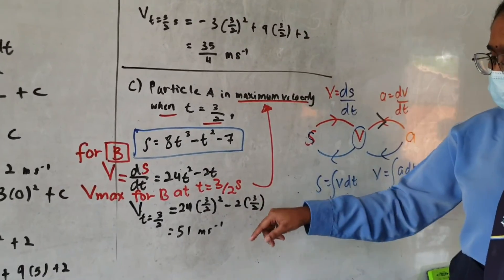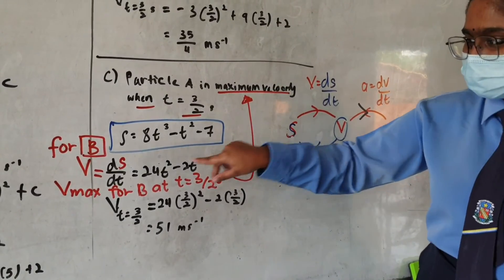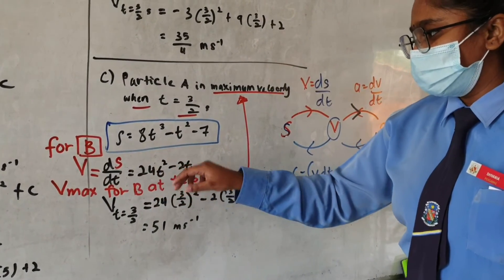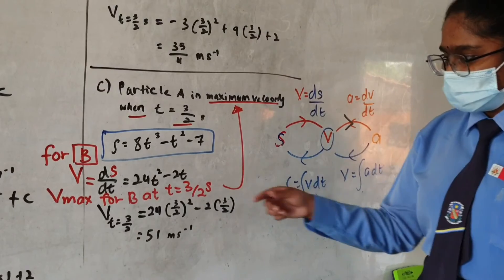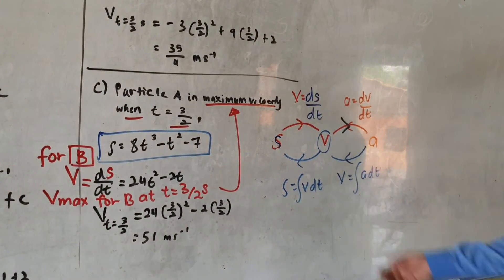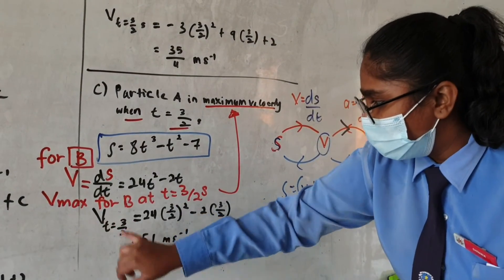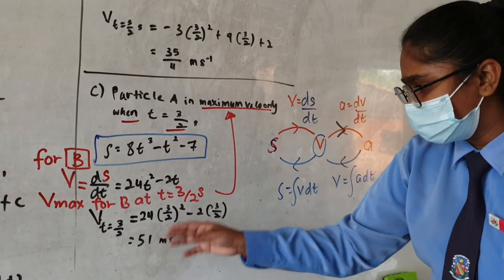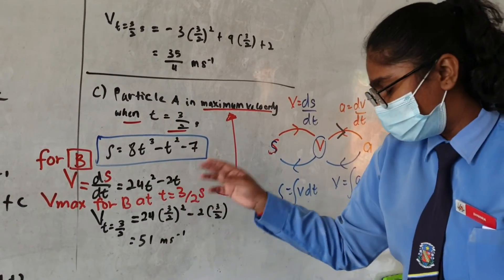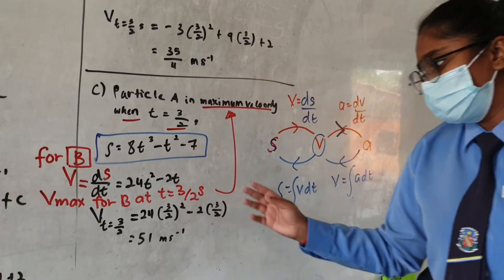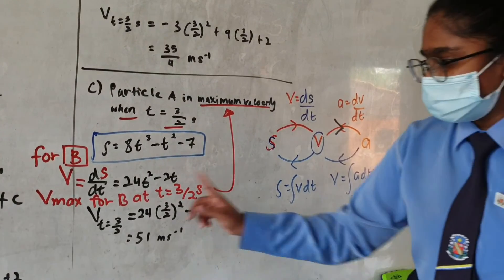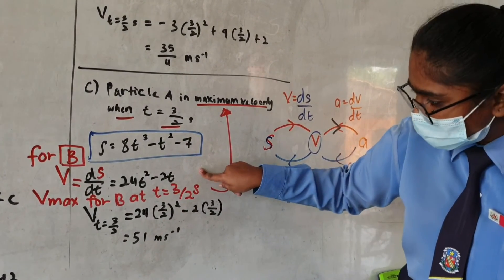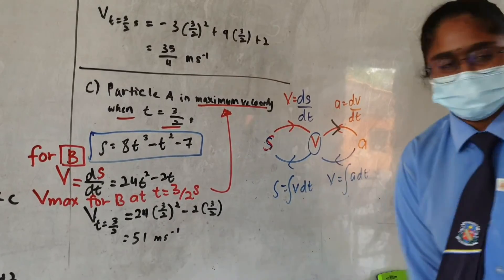So we have to differentiate the displacement given. Velocity equals ds/dt, and we will get 24t squared minus 2t. The velocity of particle B at t equals 3 over 2 seconds — substituting this value into the velocity function — gives us 51 meters per second.